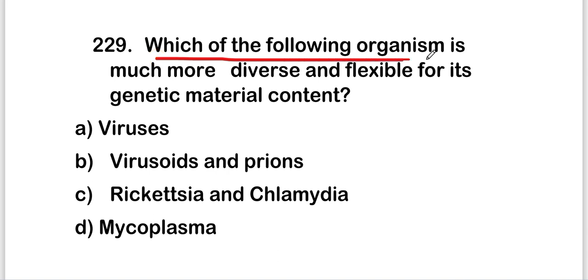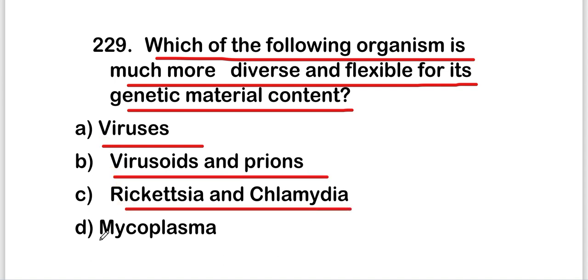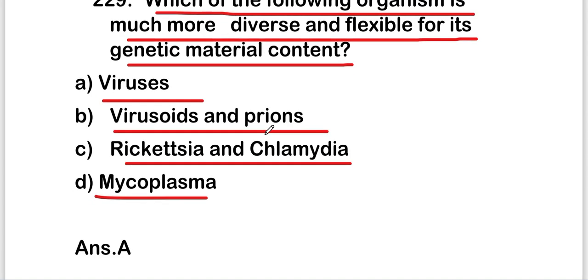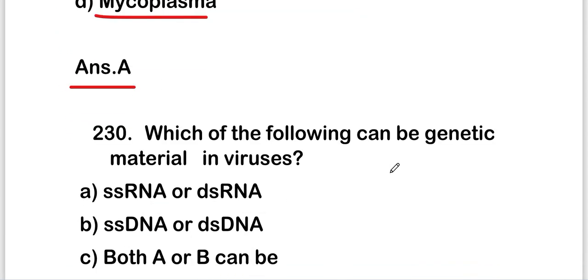The next question: which of the following organisms is much more diverse and flexible for its genetic material content? Options are viruses, virusoids and prions, Rickettsia and Chlamydia, or Mycoplasma. The right answer is option A — viruses are the organisms which are much more diverse and flexible for their genetic material content.